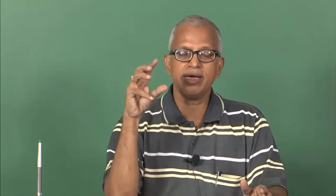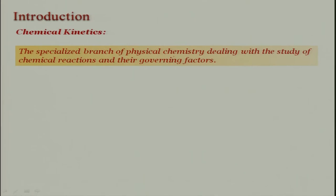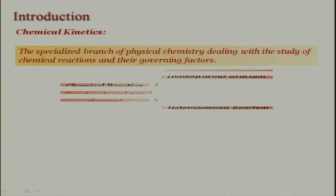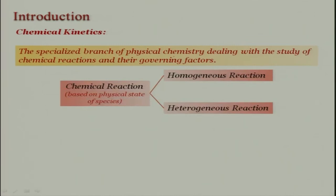Therefore, we need to look at chemical reactions and their rates. When we talk about that, we look at a specialized branch of physical chemistry — dealing with the study of chemical reactions and their governing factors — which is known as chemical kinetics. What we will be dealing with in the next few lectures will be basically about chemical kinetics.